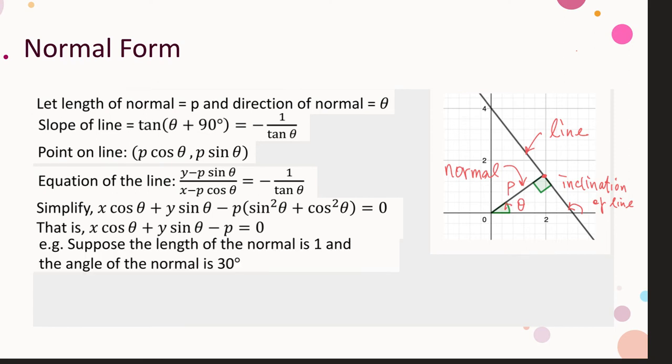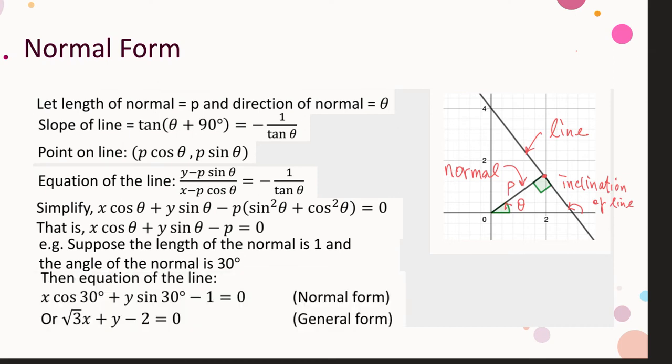For example, if the length of the normal is 1 and the angle of the normal is 30°, the equation of the line can be obtained directly from the normal form: x cos 30° + y sin 30° − 1 = 0. We can also convert it into general form: √3·x + y − 2 = 0.